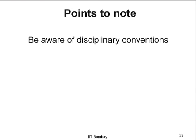Now let us look at some minor points to note. At a broad general level, all this holds in engineering and science and maybe even other fields. But you need to be aware of the conventions in your discipline, because in certain disciplines the literature review section may need to be written in a very specific way. If that is the case, please follow it. In the absence of strict guidelines, you can use the broad guidelines we have discussed. This is one minor point.